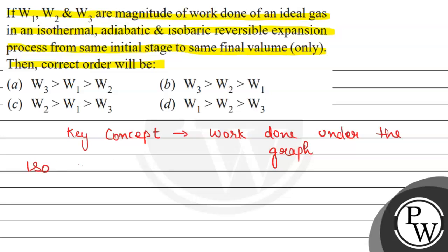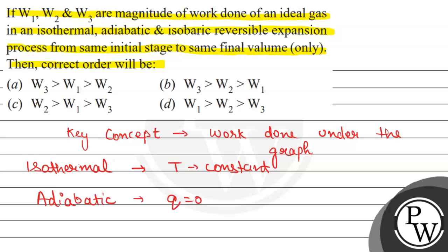The isothermal process is one where the temperature is constant. The adiabatic process is one where heat transfer is zero, so Q equals zero. The next is the isobaric process, where pressure is constant.